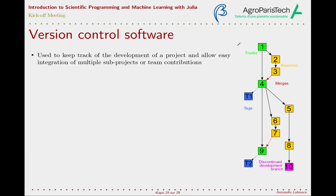Version control systems are any system that help manage keeping multiple versions of the same document and help collaboration between multiple users working toward a digital product. Basic version control systems are nowadays integrated in office applications or web applications, but we refer here to the typically more powerful tools that are used in software development.